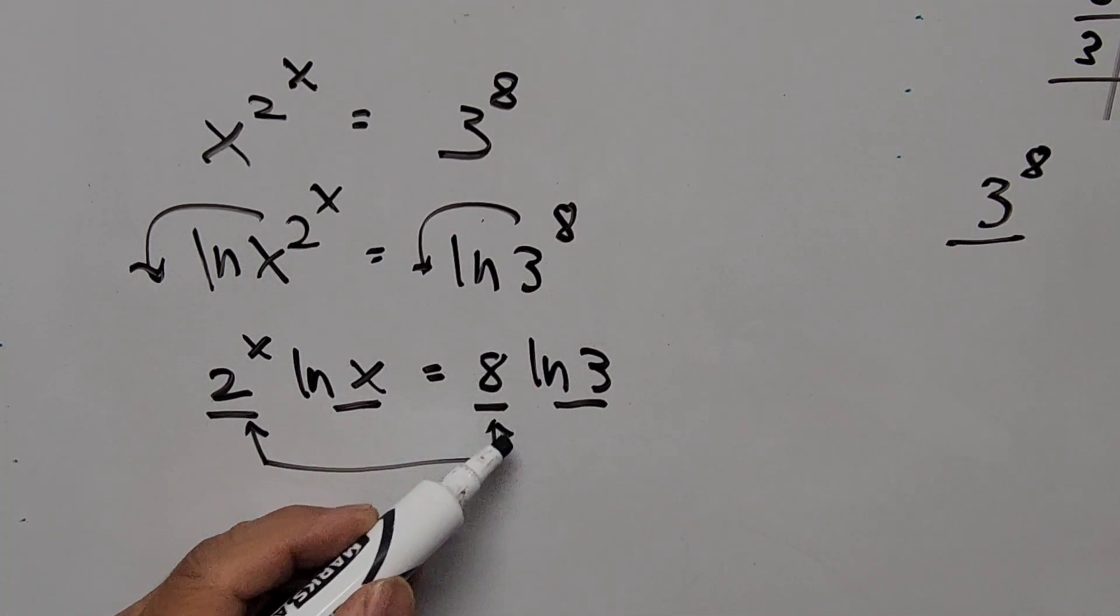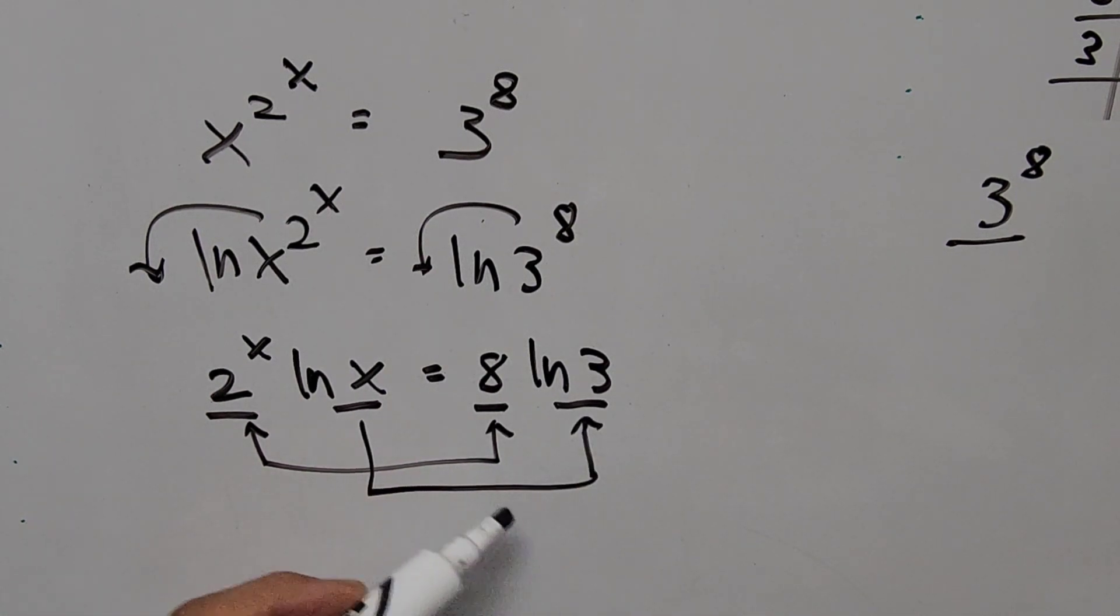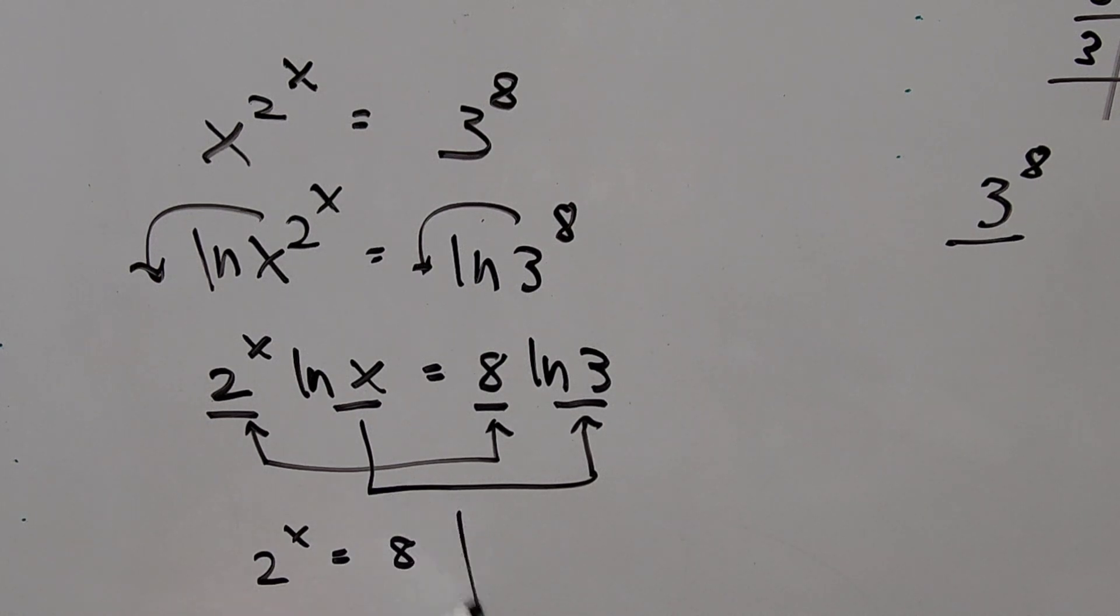And ln of x equated to ln of 3. We can have 2 to the power of x is equal to 8, and the other one, natural logarithm of x is equal to natural logarithm of 3.